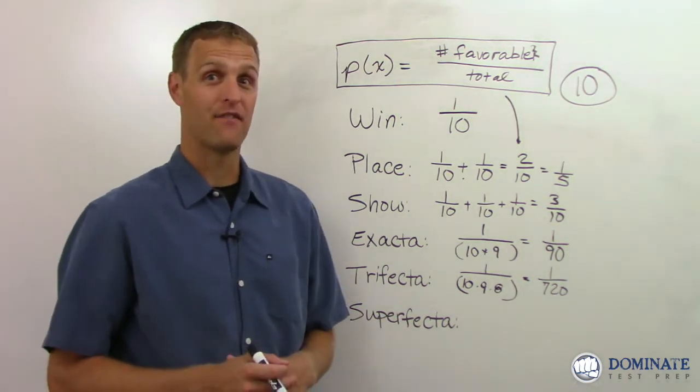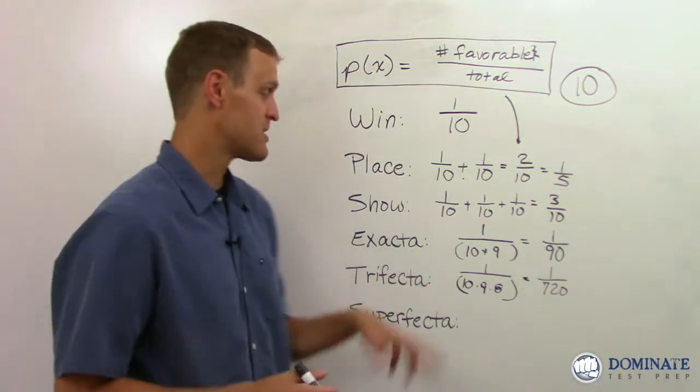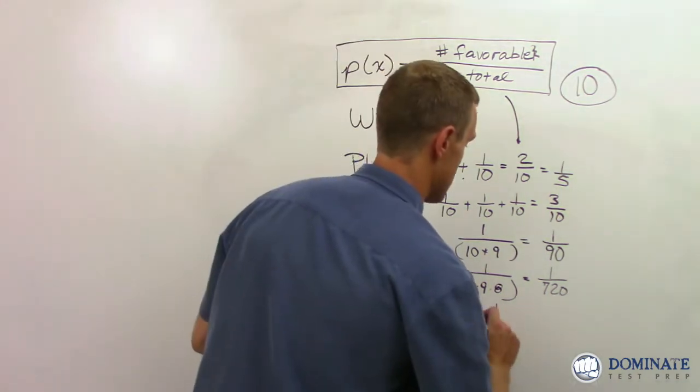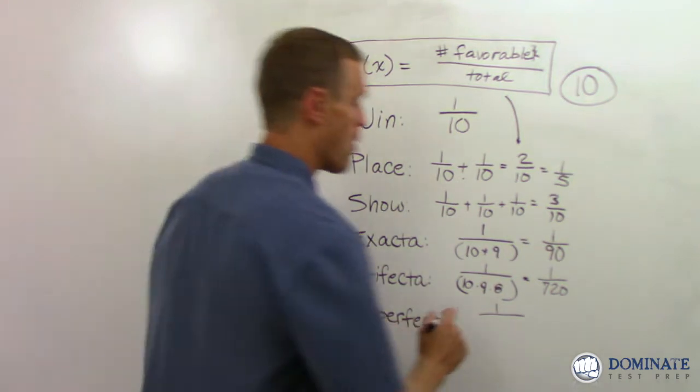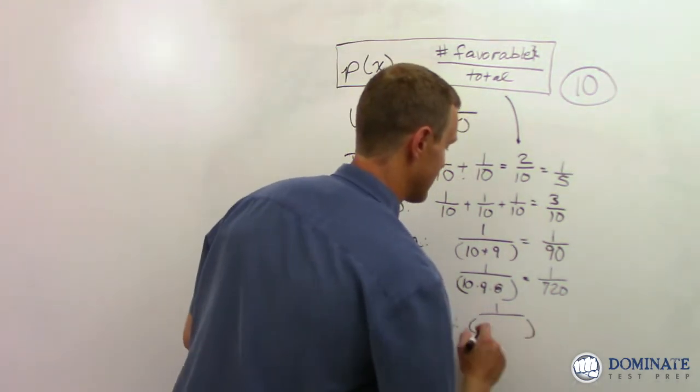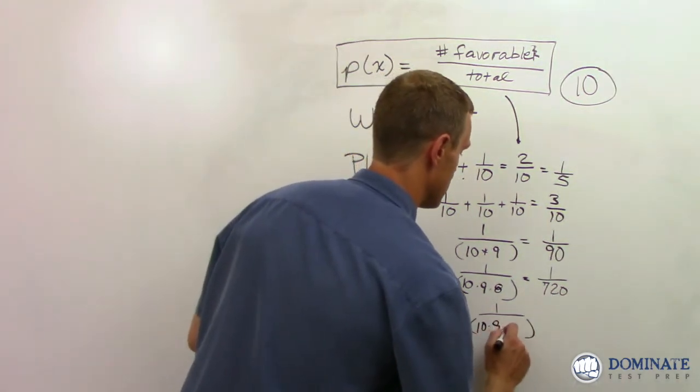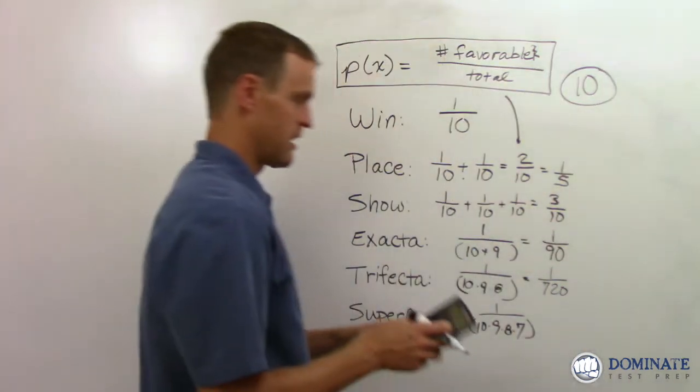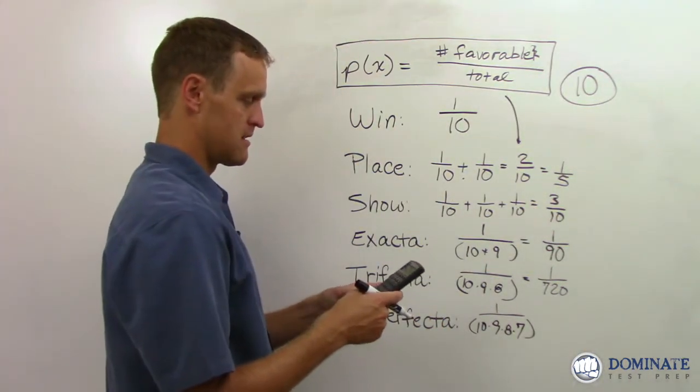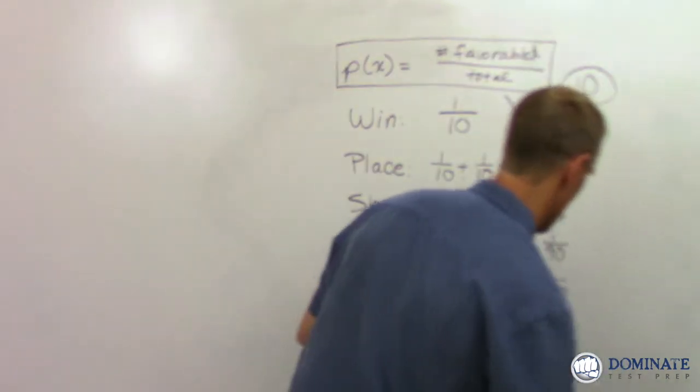And if you really want to hit a home run and go home with lots of money at the racetrack, the superfecta says, I am going to pick the first four finishing horses in order. And the total number of ways that can happen is 10 times nine times eight times seven. So I'll cheat here and say, 720 times seven is 5040.